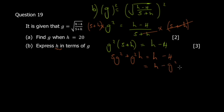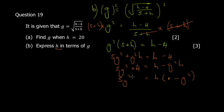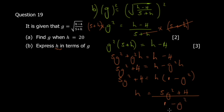Move g²h to one side: 5g² + 4 = h - g²h. Factor out h on the right: 5g² + 4 = h(1 - g²). Divide both sides by (1 - g²) to get h = (5g² + 4) / (1 - g²).